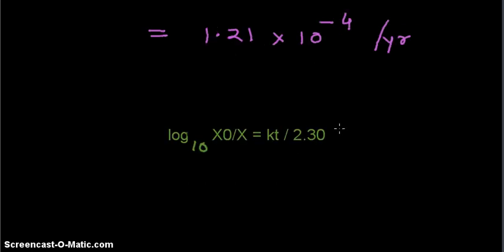Now we are going to use this formula: log to the base 10 x0 divided by x is equal to kt divided by 2.3.